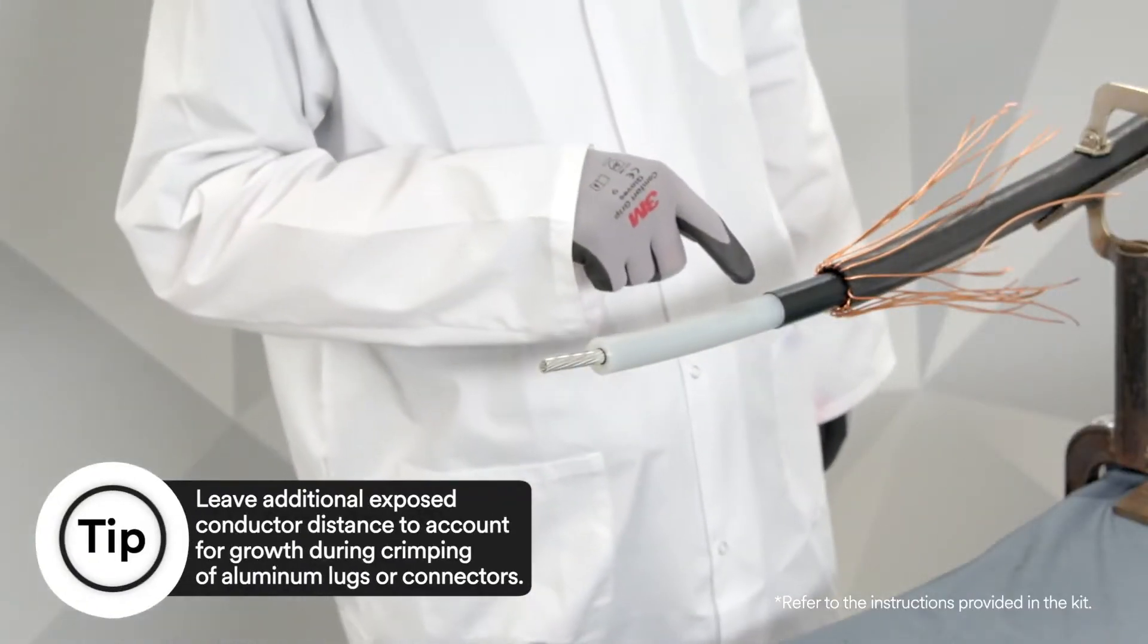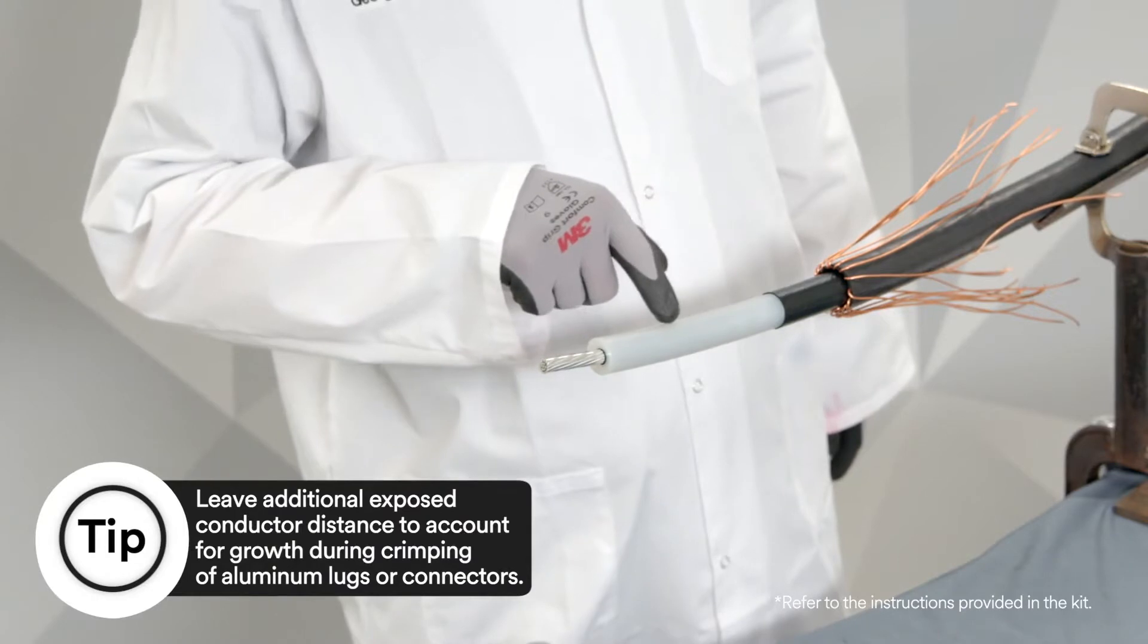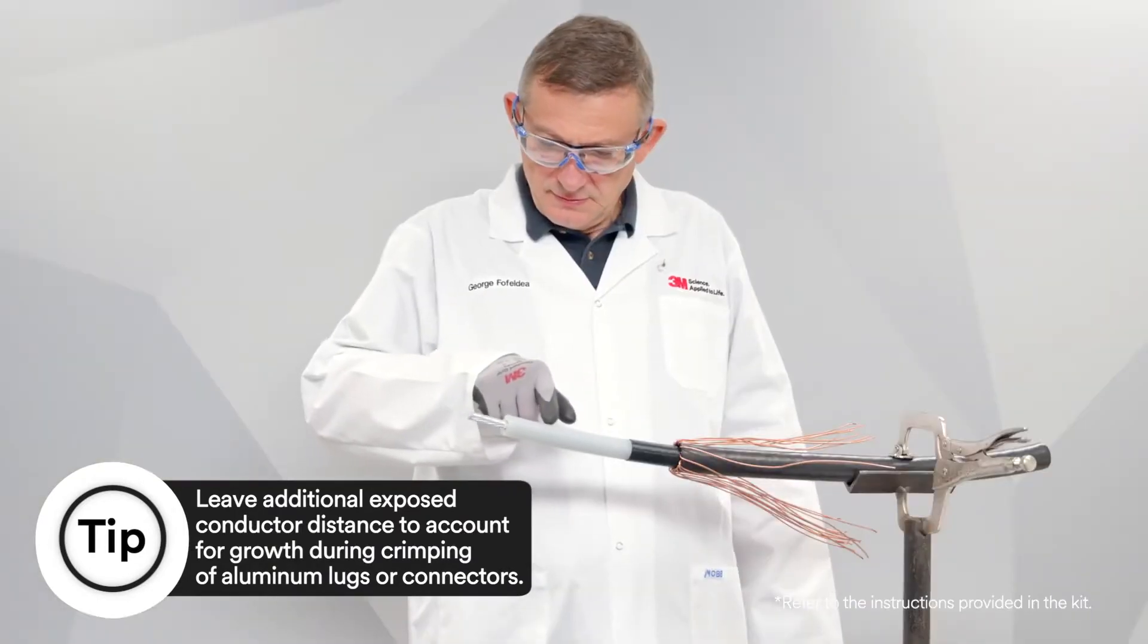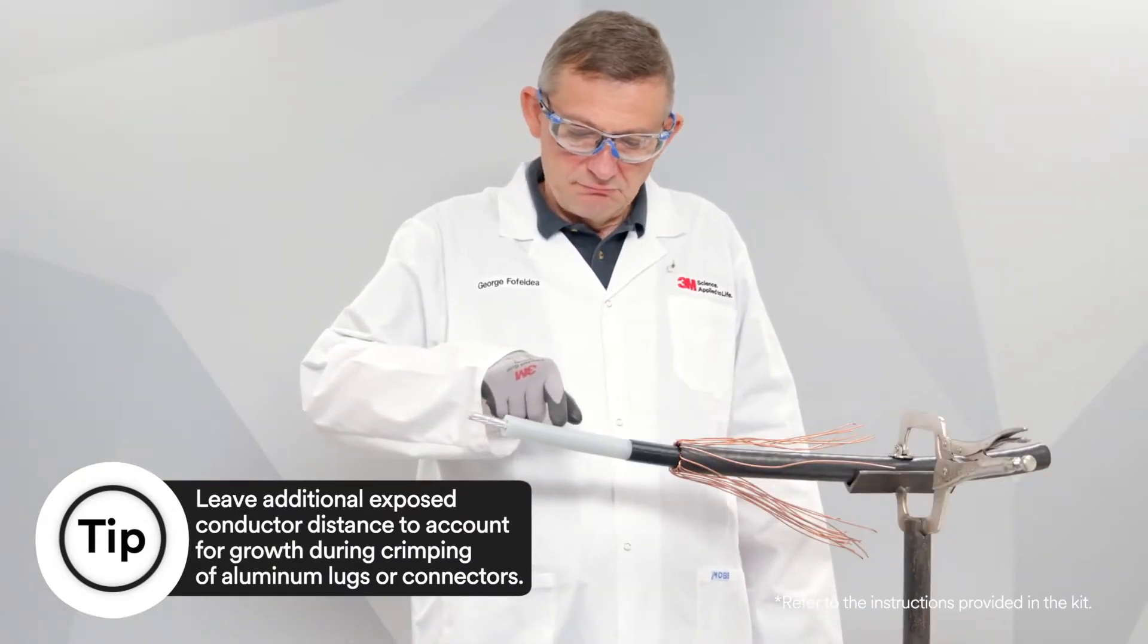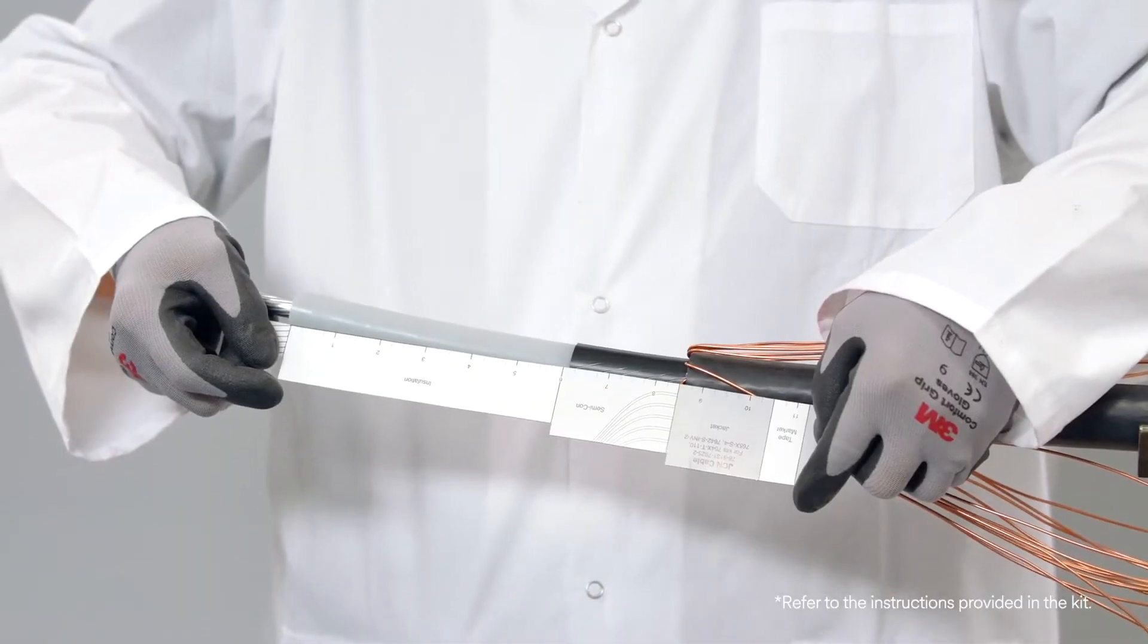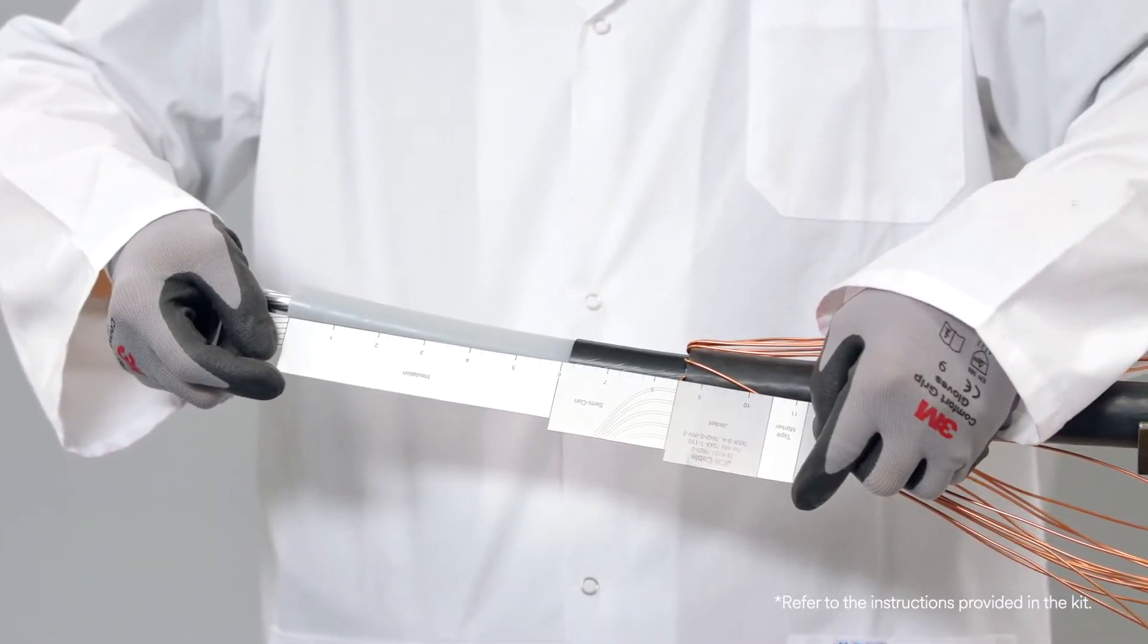It is important to make sure that you've removed all remnants of the Semi-Con layer, even if the Semi-Con layer comes off as one layer. You don't want to have any remaining black areas or particles on the cable insulation layer.